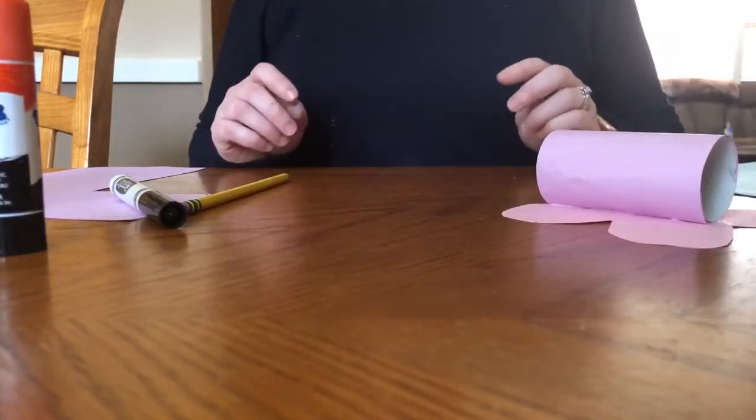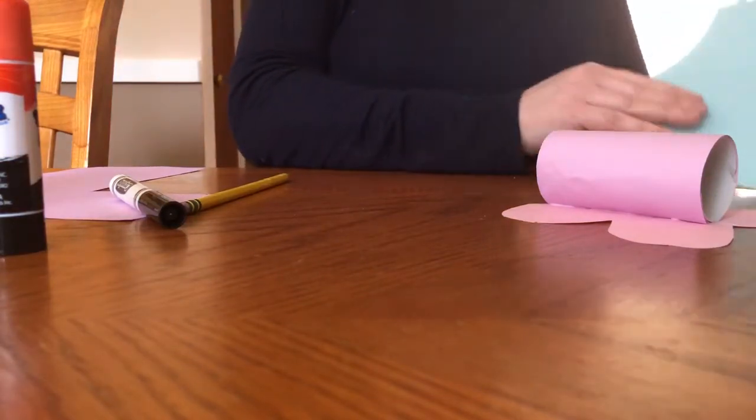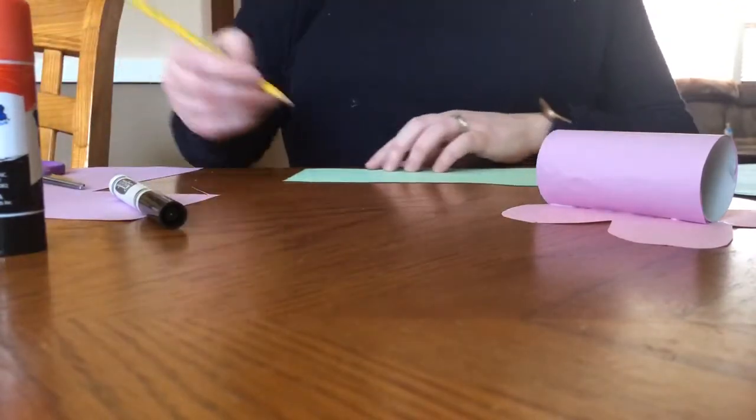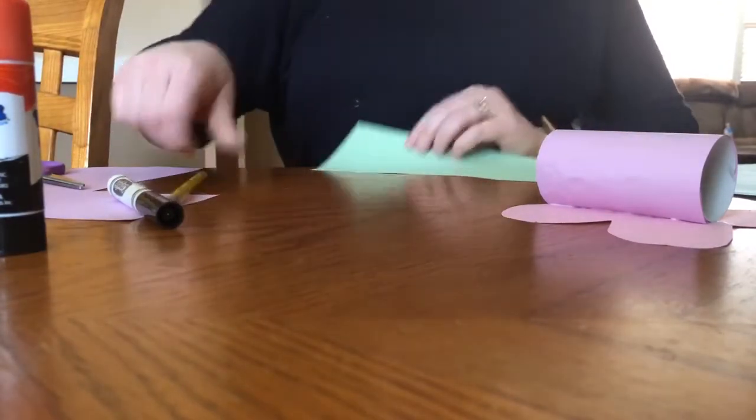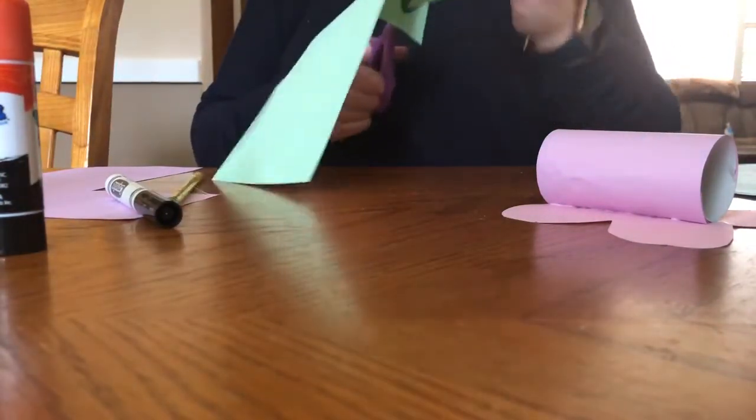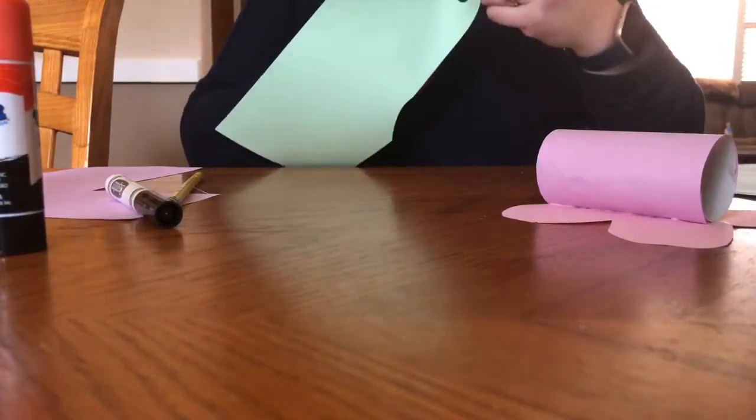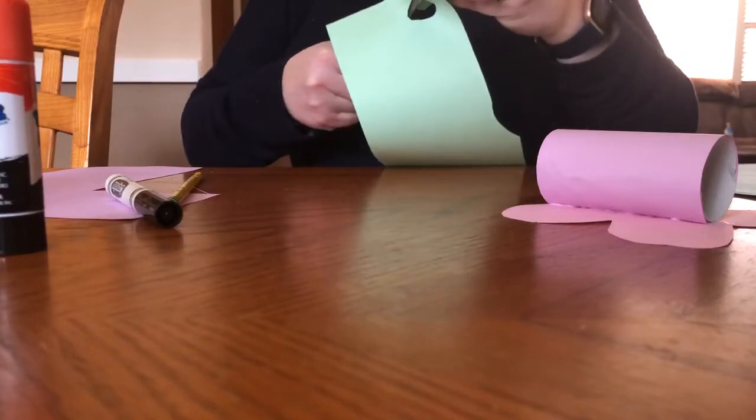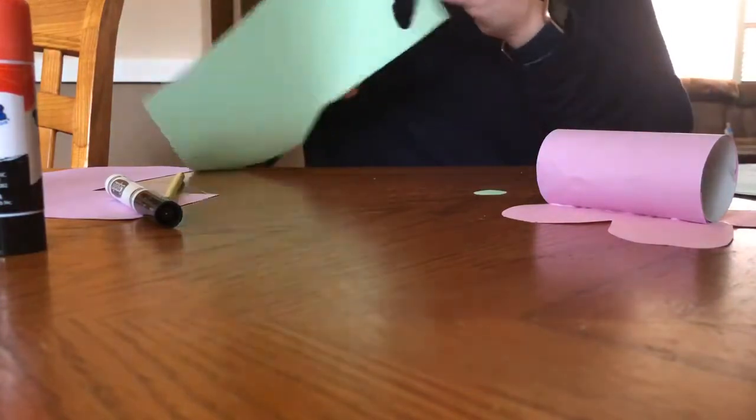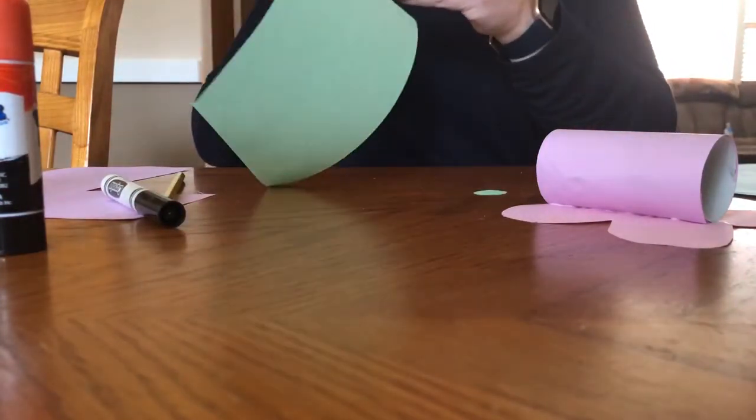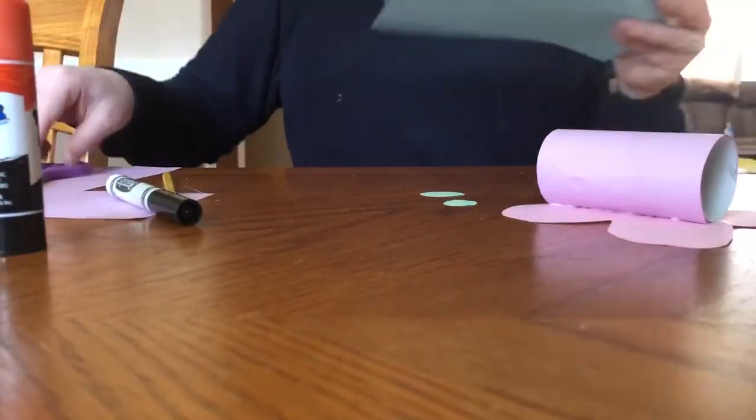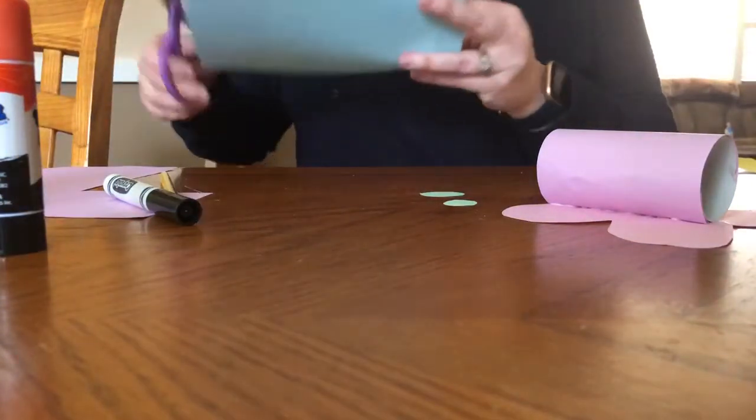Then while that's drying, I am going to use some of my leftover scraps and add a little bit of detail to my wings to make it a little bit more colorful. Again, this is something you can do but you don't have to do. But usually butterflies have a lot of colors, so I thought adding a little bit more detail to these might be nice. Let's see, maybe I'll use a little bit of blue as well.